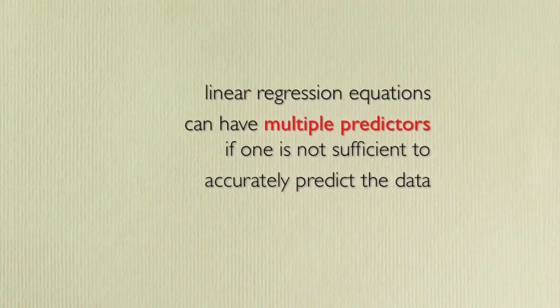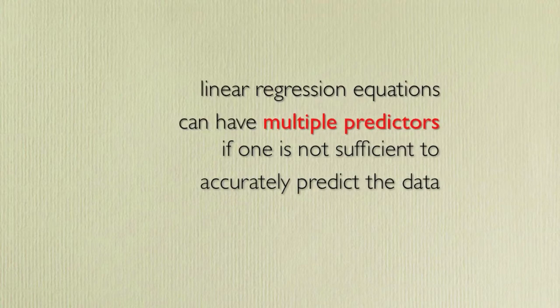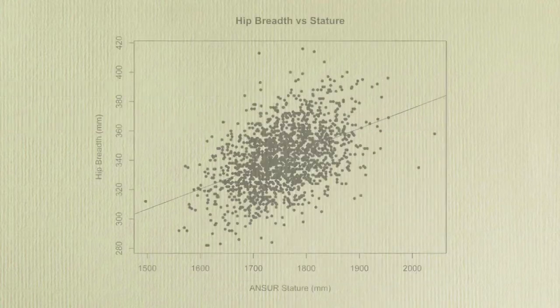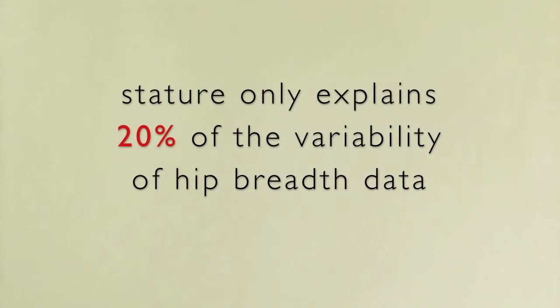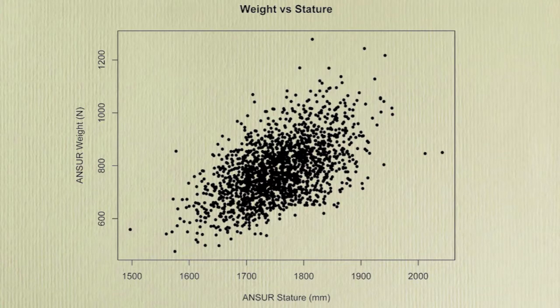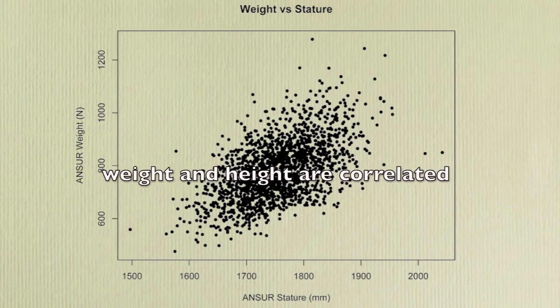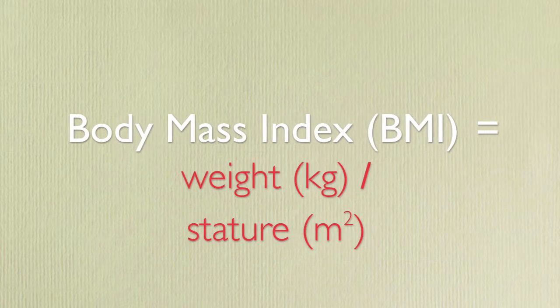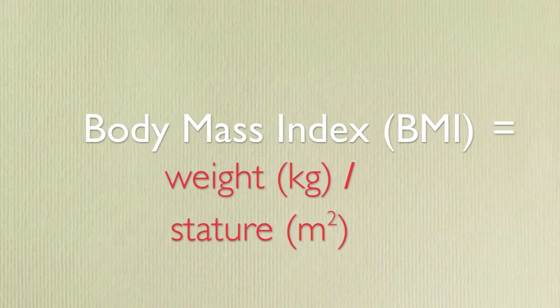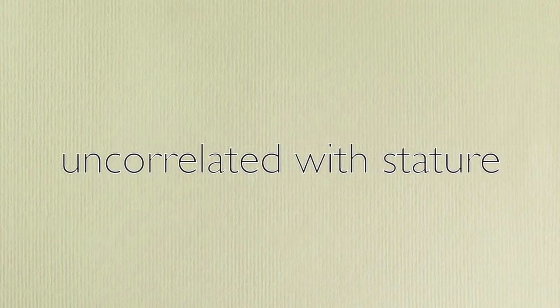Linear regression equations can have multiple predictors if one is not sufficient to accurately predict the data. Some anthropometry, such as hip breadth, are not well correlated with stature. If we look at the r-squared value for predicting hip breadth using stature, we see it is only 0.20, indicating that stature only explains 20% of the variability in the hip breadth data. This is because a person's weight has an impact on their hip breadth. Since weight and height are correlated, body mass index, or BMI, is a useful tool. BMI is calculated by weight in kilograms divided by stature in meters squared and is essentially uncorrelated with stature.